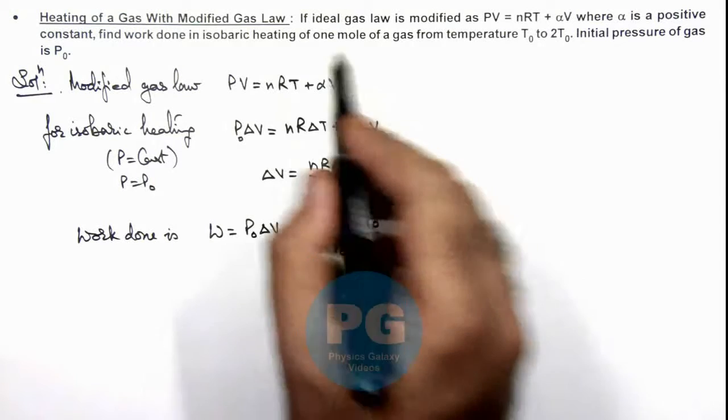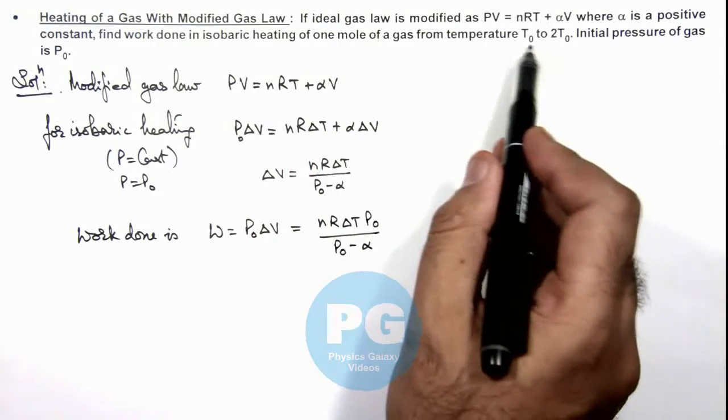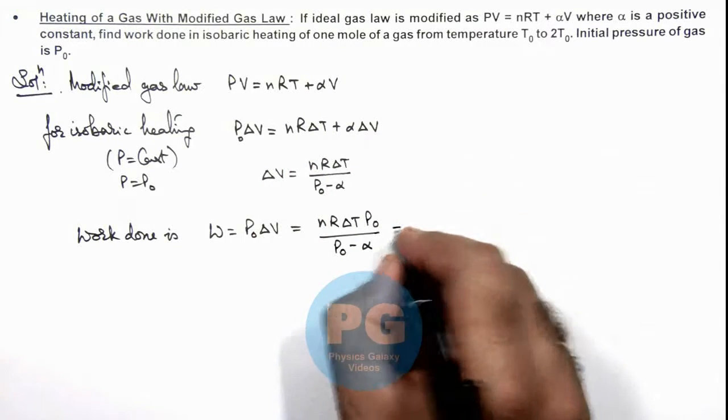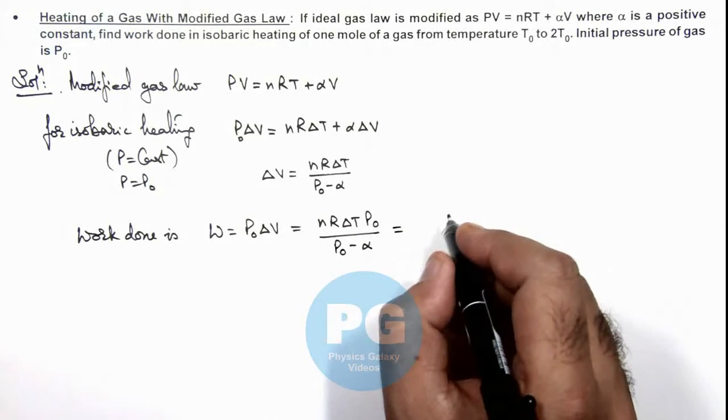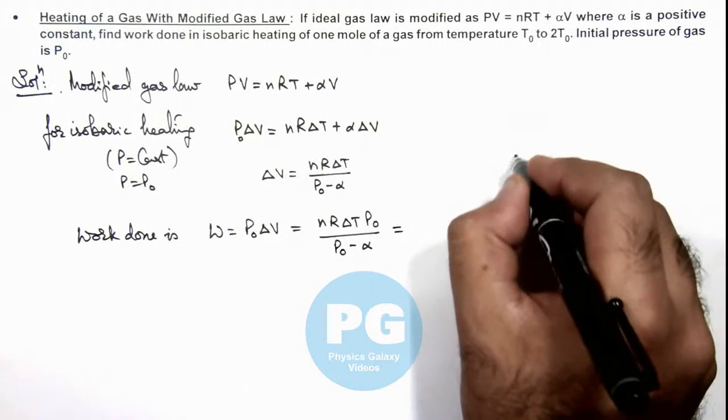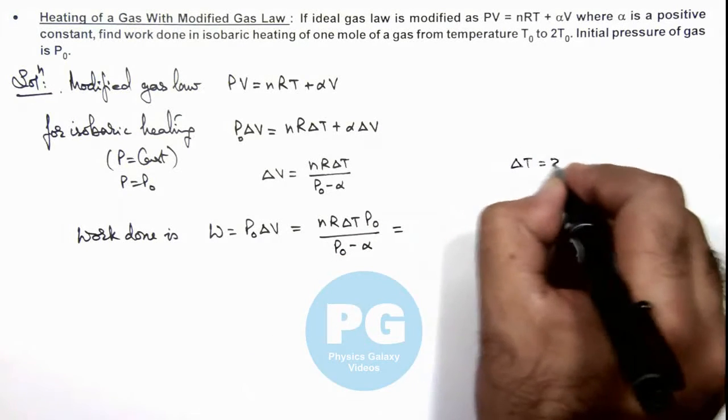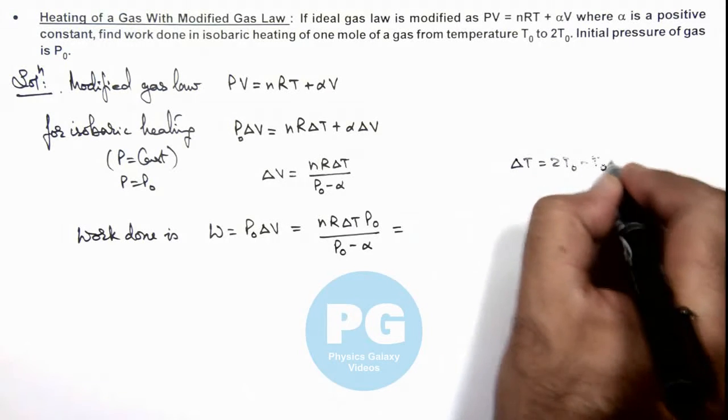Now we are given that 1 mole of gas is taken from T₀ to 2T₀. So n will be taken as 1. ∆T here we can write, this is 2T₀ - T₀ = T₀.